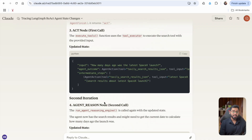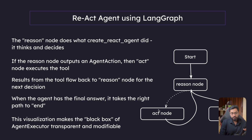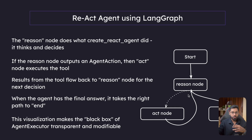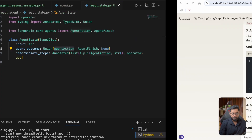As soon as the tool execution is done, the control flow is going to go back to the reason node. All that history is going to be sent back to the LLM in the agent scratchpad. So now it has solved one particular problem. Now it needs to solve the next problem, and for that it might use a different tool. So we have the second iteration.